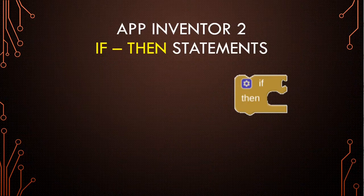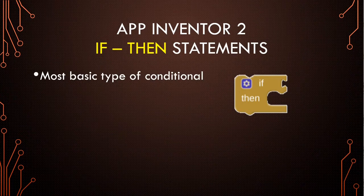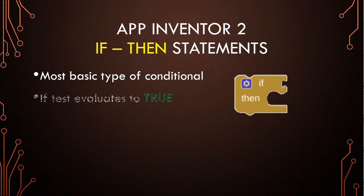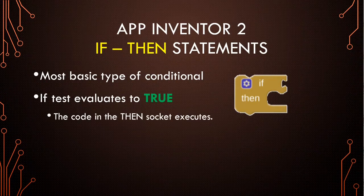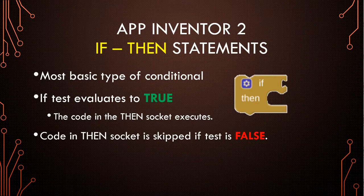The first one is the if-then statement. It's the most basic type of conditional statement in App Inventor 2. You can see a picture of the code block on the right. It just has two sockets: the if-socket and the then-socket. We put the test next to the if, and if that test evaluates to true, then the code in the then-socket executes. If it evaluates to false, the code in the then just gets skipped.